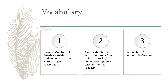Vocabulary for today: we have junkers, members of Prussia's wealthy landowning class that were strongly conservative. Realpolitik is a German term that means the politics of reality — basically tough power politics with no room for idealism. And Kaiser is the term for emperor in German.